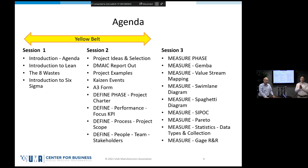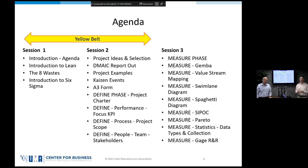There are three things you have to do to get your certification. Number one, you're going to have to finish this training — that's easy. We have recordings, so if you can't make it to a session, you can watch it online through our portal. Number two, you're going to have to complete a project.